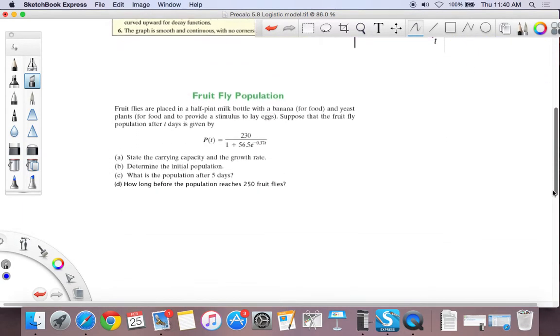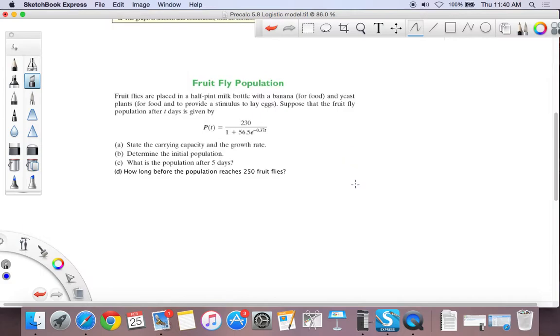So let's just do an example. It says fruit flies are placed in a half-pint milk bottle with banana, fruit and yeast. And suppose that the fruit fly population after t days is given by... So here we have a complicated expression, right? Logistic model because there is an exponential underneath the fraction bar.